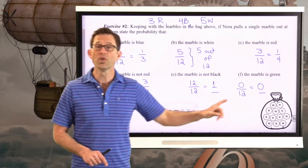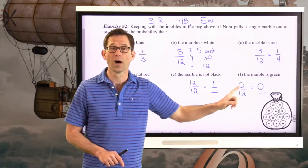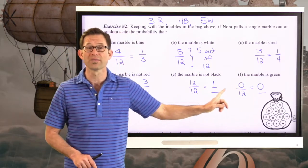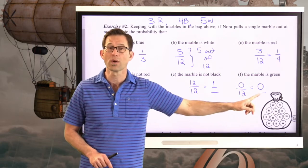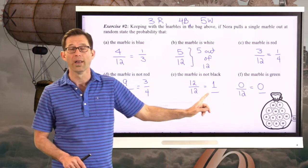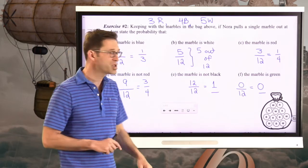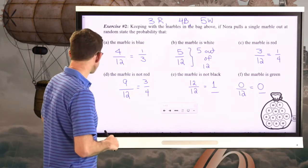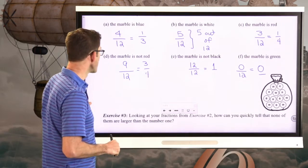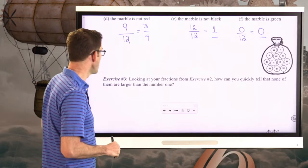Those last two are very important. There's a 100% chance the marble won't be black, so the probability is one. And there's a zero percent chance the marble will be green, so the probability is zero. Those are the two extremes of our probability scale: zero to one.